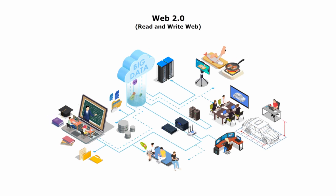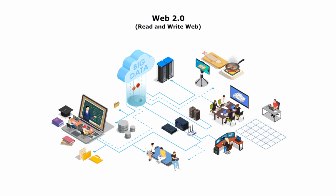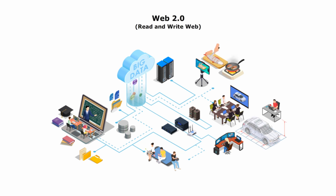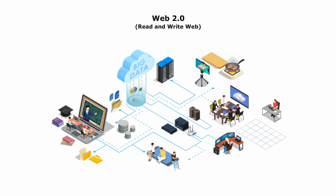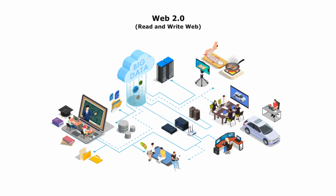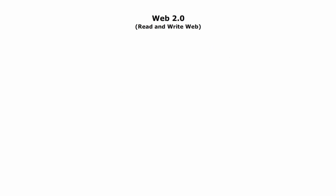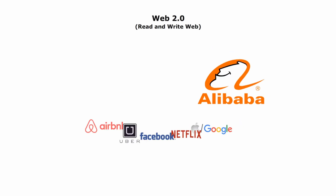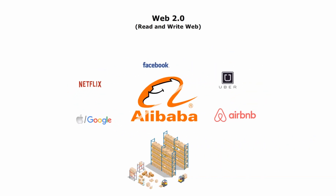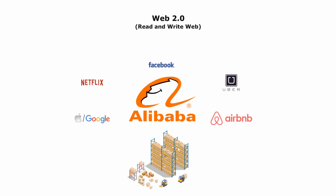There are three main features of Web 2.0. The first feature is user-generated content. Web 2.0 allows users to actively participate and contribute to the Web by creating and sharing content. Here are some interesting facts: Alibaba, the world's highest volume merchant, owns no inventory.